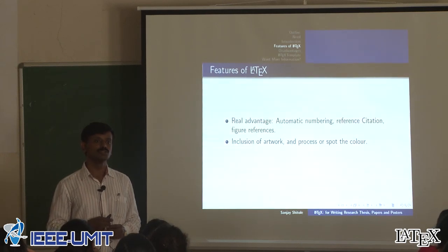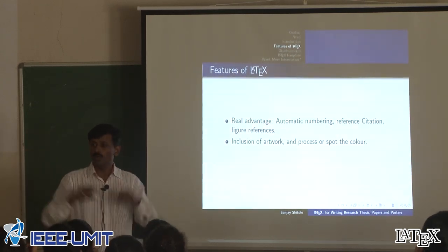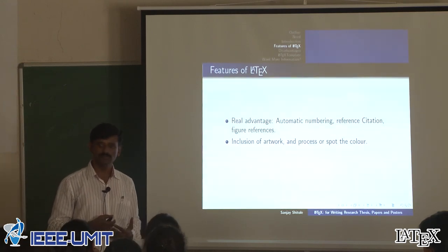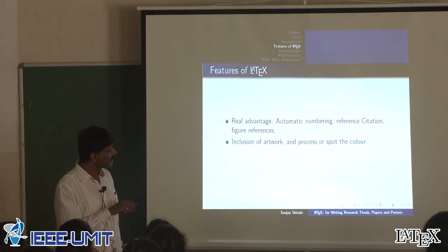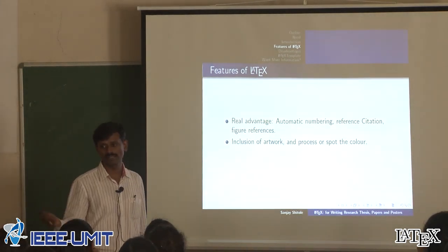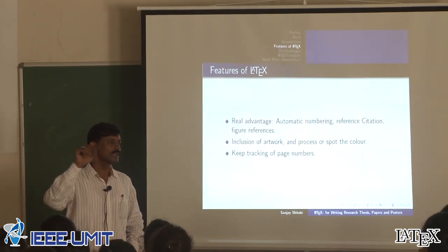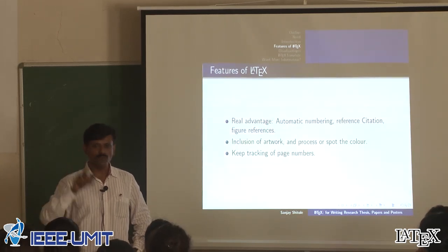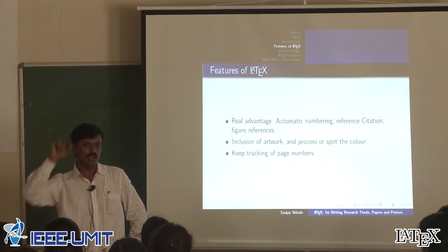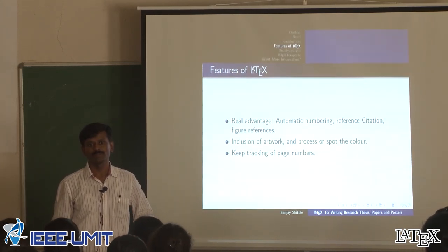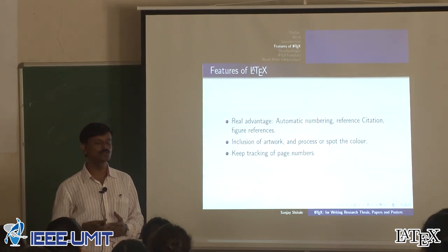Different types of artwork can be included — photographs, animations, graphics, block diagrams, and downloaded figures can all be easily included in your report. You can also deal with colors, specifying particular text in a particular color. LaTeX keeps track of page numbers throughout your entire report, handling Roman numbering for the table of contents pages and regular numbering for chapters. If you use the provided template, all these things are automatically taken care of.